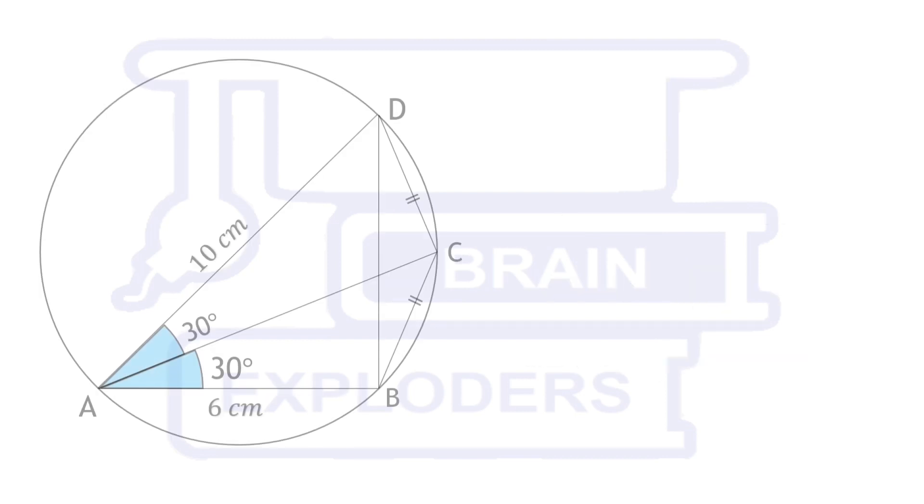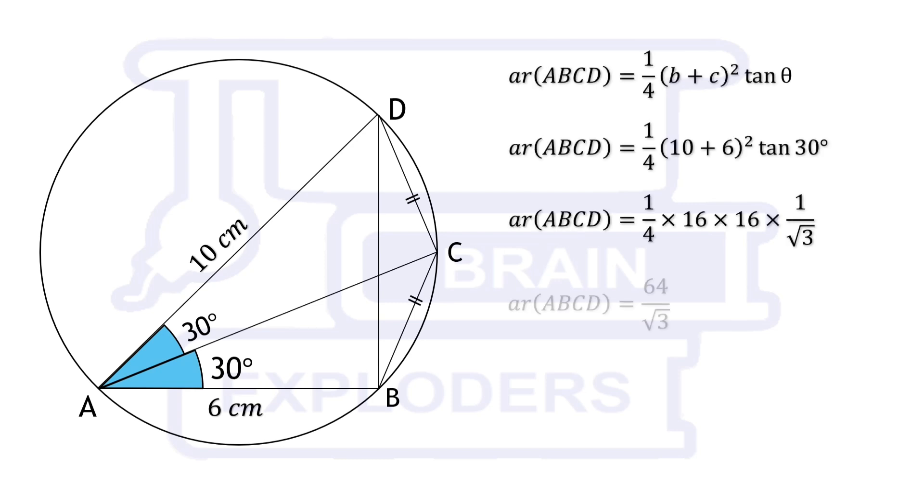In the given question, b is equal to 10 cm, c is equal to 6 cm, and theta is equal to 30 degrees. On putting these values, we get area of quadrilateral ABCD is equal to 64 root 3 over 3 cm squared. This was our solution.